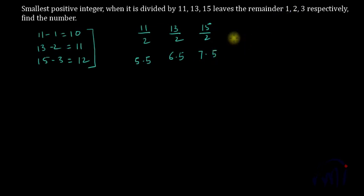And now if we find the difference of these new divisors and the remainders, that means 5.5 minus 1, 6.5 minus 2, and 7.5 minus 3, in each case the difference is 4.5. And now we have the common difference which is 4.5.